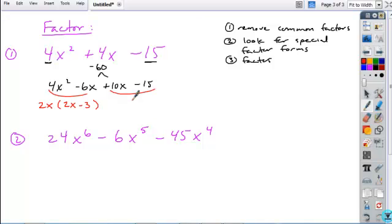Now, if I've done this right, 2x minus 3 should be the binomial factor left here when I remove common factors. So let's check and see if that's true. So looking at this second pair of terms, what common factors can I remove? Just a 5 and I'm left with a 2x and a minus 3.